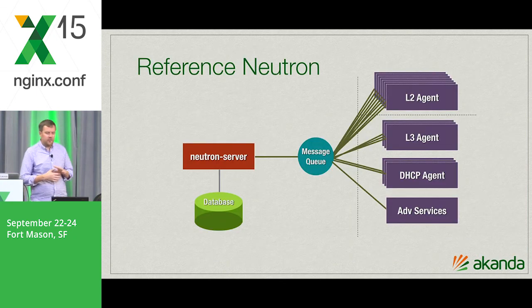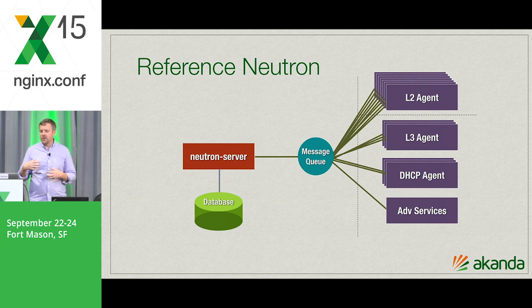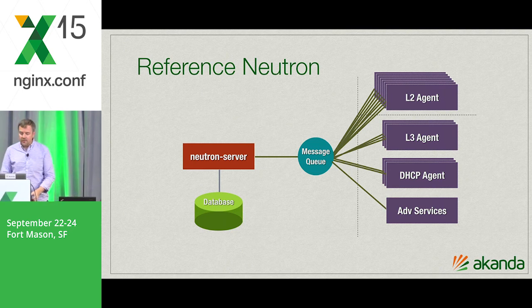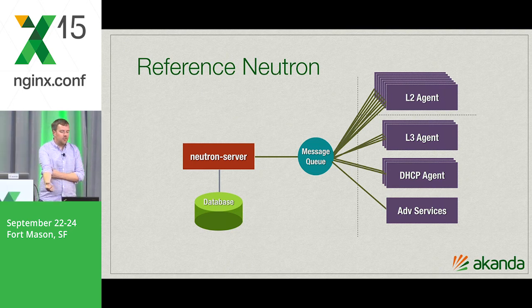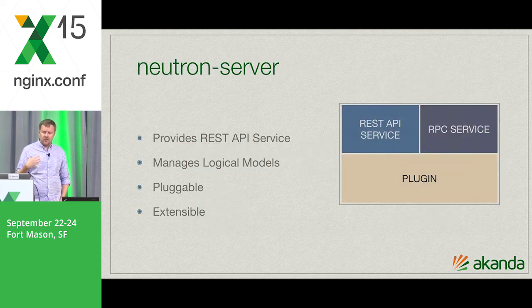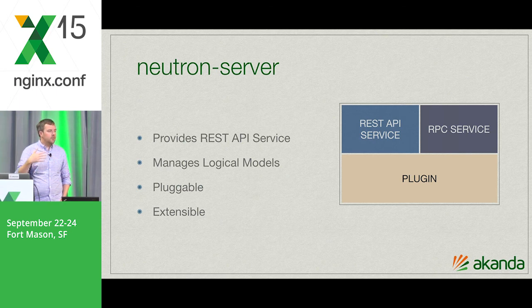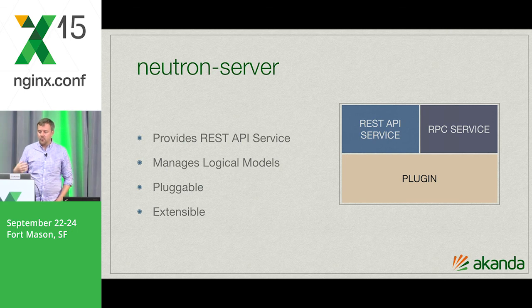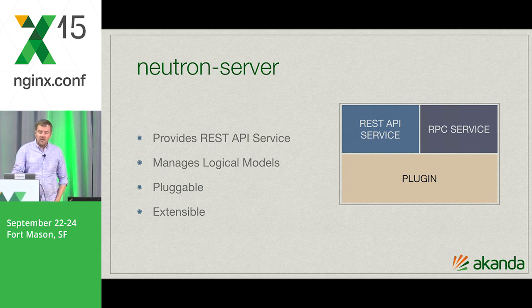The reference architecture for Neutron is really a collection of microservices. You have a layer two agent which runs typically on hypervisors, a layer three agent, a DHCP agent, and then advanced service agents which manage and manipulate advanced services such as load balancing, firewall, and VPN. The Neutron server itself has a REST API, an RPC service, and a plug-in. These are the frameworks for providing that generic tenant view into orchestrating the network. We're going to dive into those last two points — being pluggable and extensible — which is how we're able to get load balancing into OpenStack.